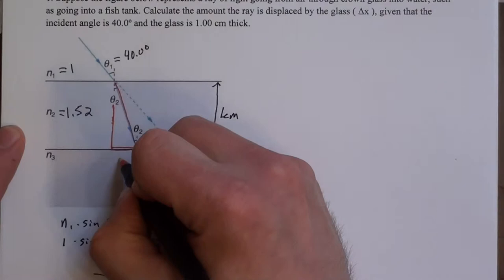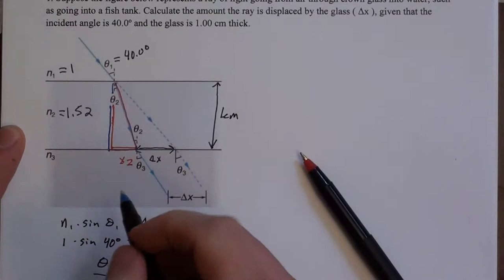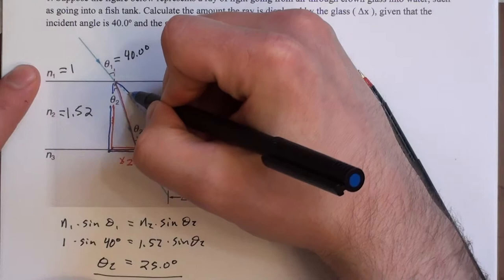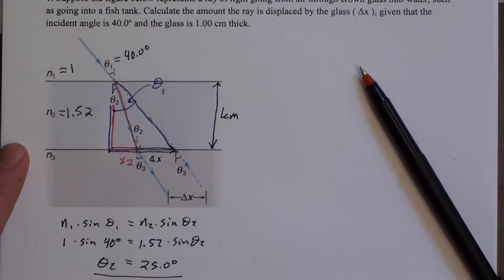And the bottom of this triangle we can label that as x2. And then we can trace out another triangle that also has this vertical but goes all the way over to the original path that theta 1, or that this light ray had. And this angle right here is theta 1.